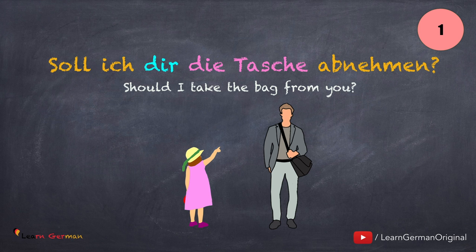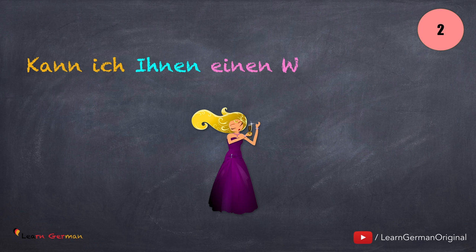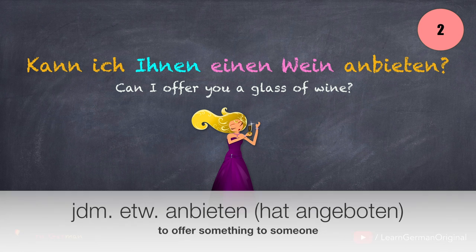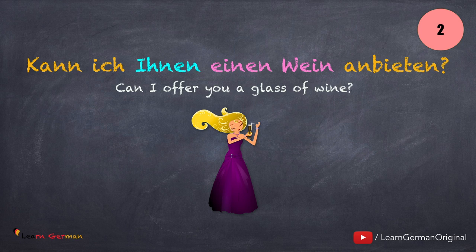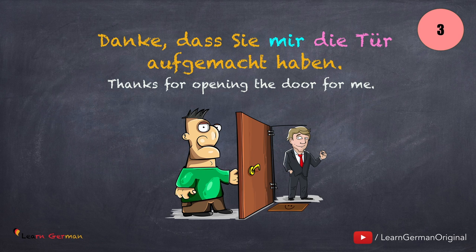Here comes the next sentence: Kann ich Ihnen einen Wein anbieten? In this case, you should learn jemandem etwas anbieten.